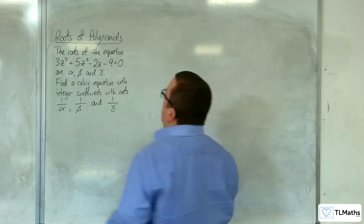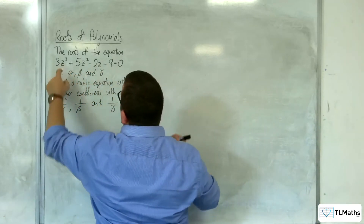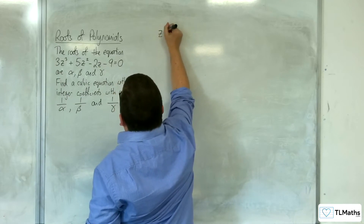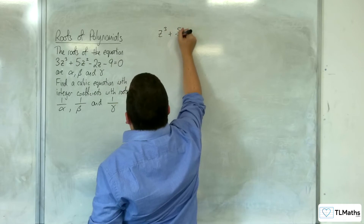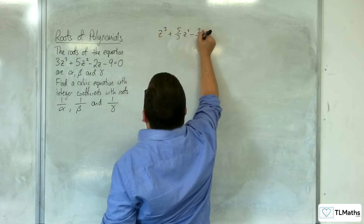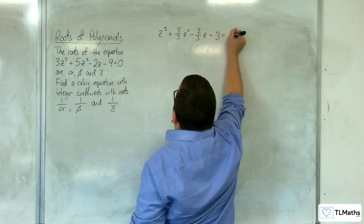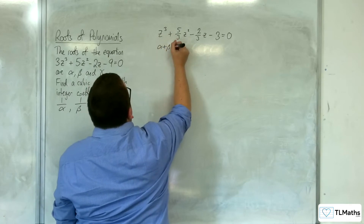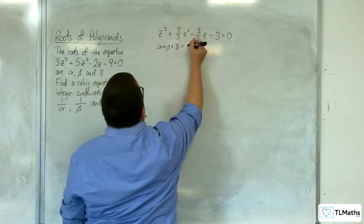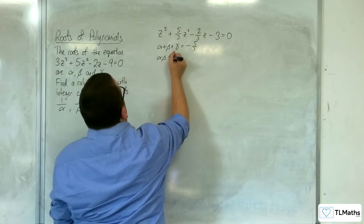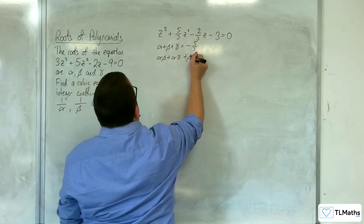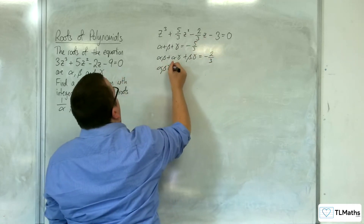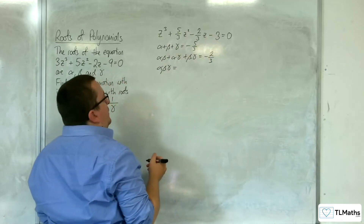First things first, we need to make sure that the coefficient of z cubed is 1, so we're going to divide through by 3. So z cubed plus 5 thirds z squared take away 2 thirds z take away 3 equals 0. From that, we can say that alpha plus beta plus gamma equals minus 5 thirds, alpha beta plus alpha gamma plus beta gamma equals minus 2 thirds, and alpha beta gamma equals positive 3.